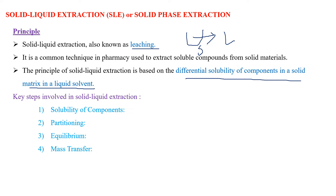In your solid matrix, different components will be present. The different components have different solubility towards your liquid solvent. So we have to select the solvent in such a way that the component of interest should dissolve in the selected solvent. In this way, we can extract the desired component.